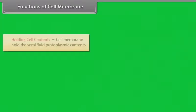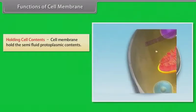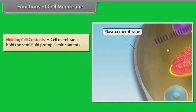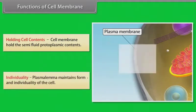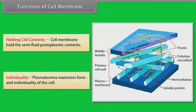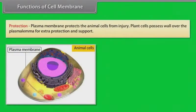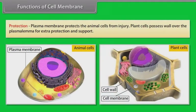Functions of cell membrane. Holding cell contents: the cell membrane holds the semi-fluid protoplasmic contents. Individuality: plasmalemma maintains form and individuality of the cell. Protection: plasma membrane protects the animal cells from injury. Plant cells possess a wall over the plasmalemma for extra protection and support.